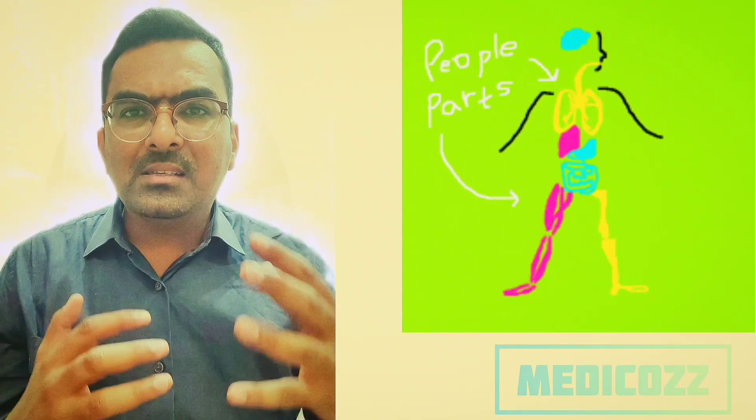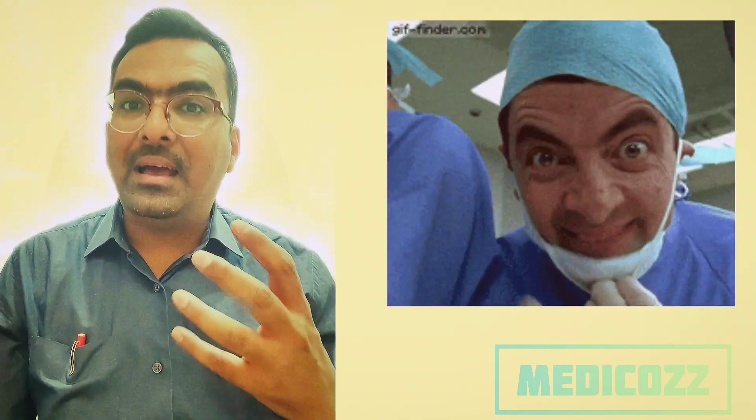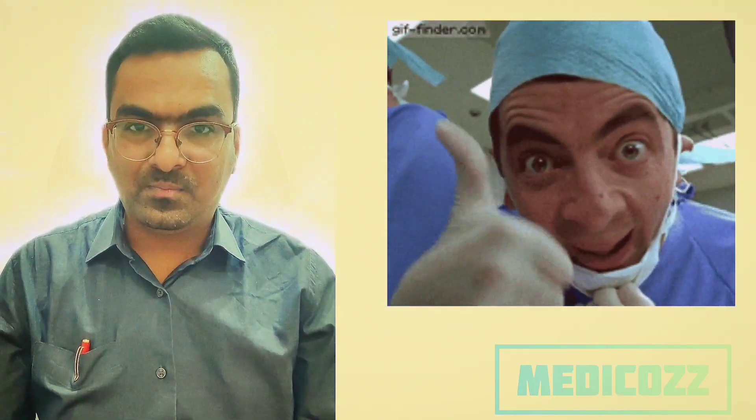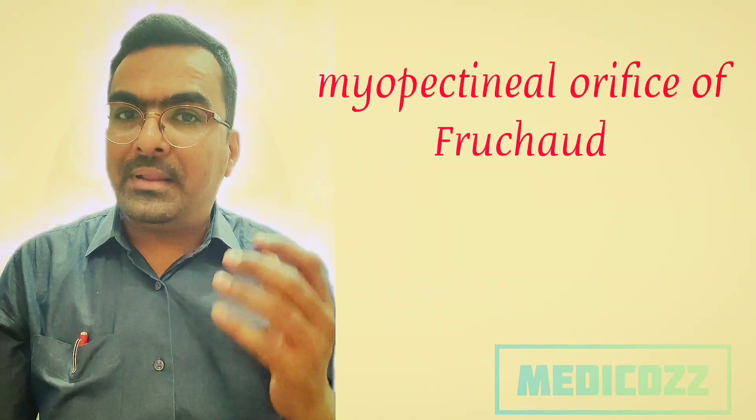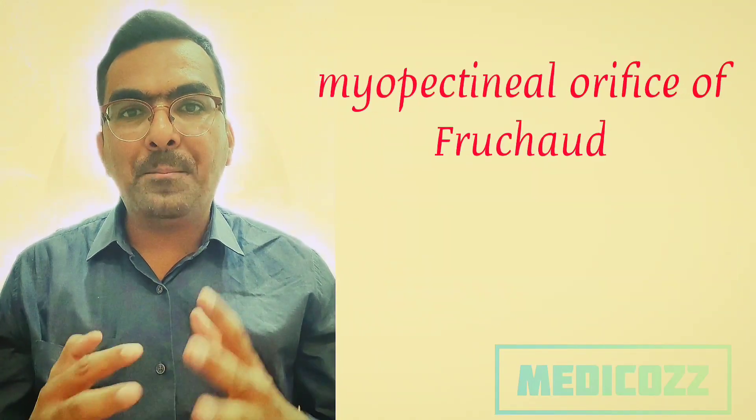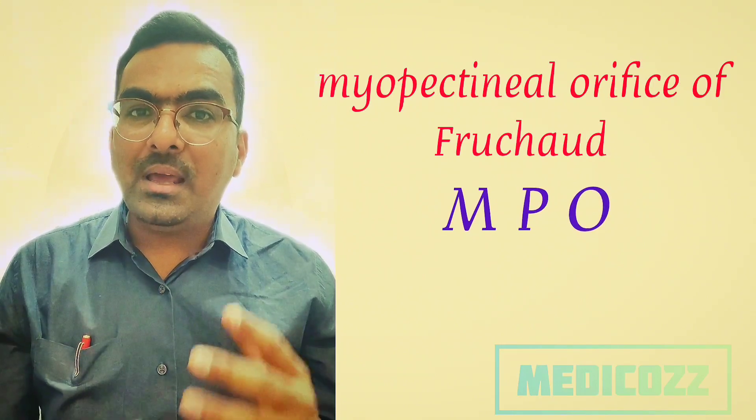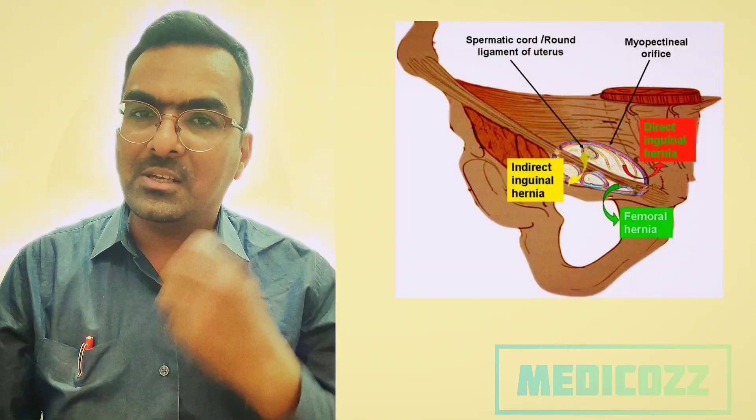First, let's understand the myopectinial orifice and the anatomical basis of groin hernias. Froucard's myopectinial orifice, commonly abbreviated as MPO, is a crucial anatomical structure within the inguinal region.